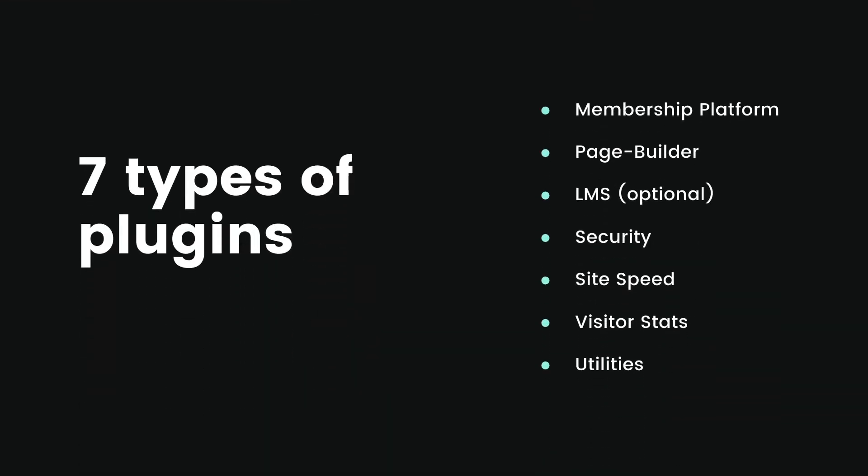So that's it — those are the eight plugins I personally install on every membership site I build. You might not need them all, or you may choose a different option for certain categories, but you want to make sure you have something for each of these seven categories: your membership platform, a page builder, an LMS if you're doing online courses, a security plugin, site speed, visitor stats, and the utility plugins I mentioned. If you have something for each one of those, that'll cover your bases and ensure you have a stable platform to build and grow your online business. If you liked the video, give it a thumbs up, subscribe if you haven't yet, and if you'd like to learn more about Wishlist Member, visit wishlistmember.com. Thanks for watching — we'll talk to you next time.